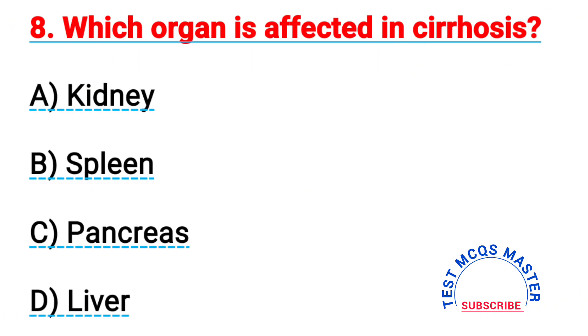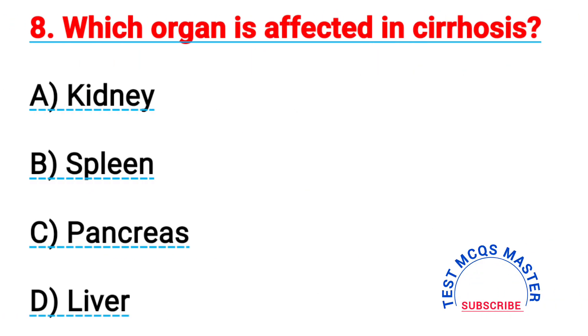Question number eight: which organ is affected in cirrhosis? The right answer is D, liver.